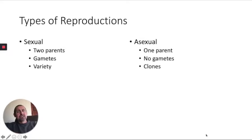For sexual reproduction you need two parents as opposed to just one. Also, gametes are involved. Gametes are sex cells like sperm and egg. And with sexual reproduction it provides a lot of genetic variety. But with asexual reproduction the offspring are simply clones. They're genetically identical to their parents.